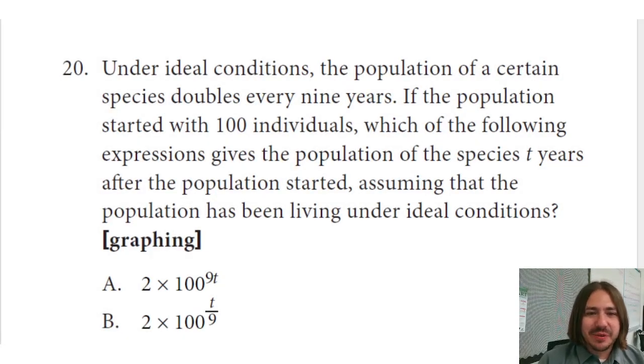Hey y'all, welcome back. Number 20 says: under ideal conditions, the population of a certain species doubles every nine years. If the population started with 100 individuals, which of the following expressions gives the population of the species t years after the population started, assuming the population has been living under ideal conditions?